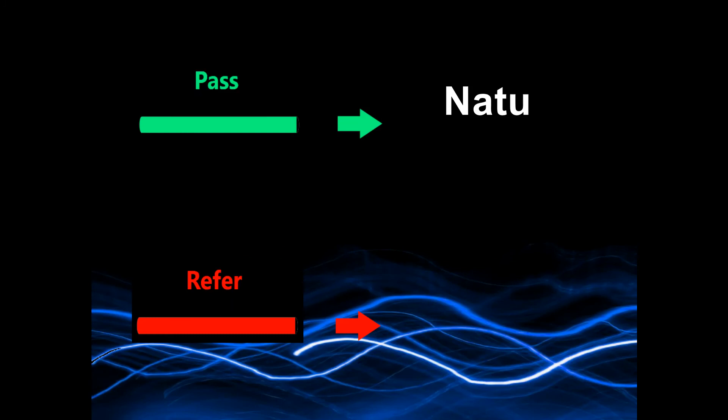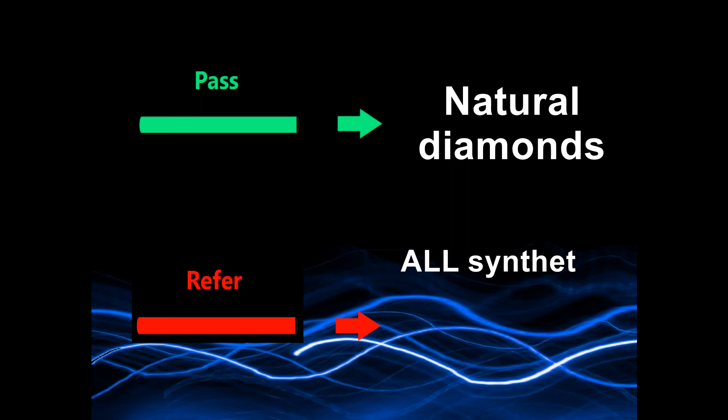In conclusion, when a colorless stone gets a pass from the EXA, that is a natural diamond. All the synthetic diamonds and its simulants get a refer.